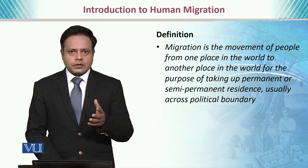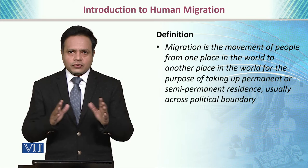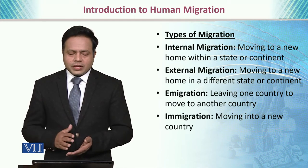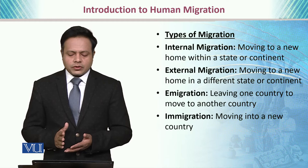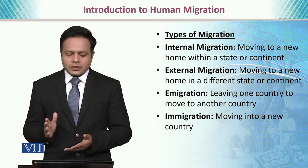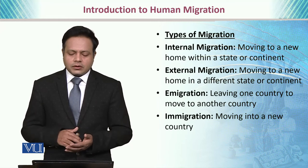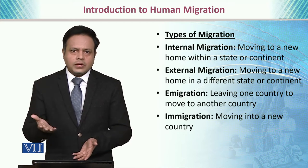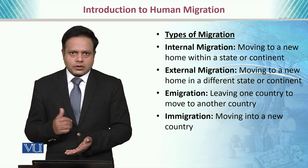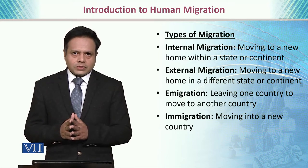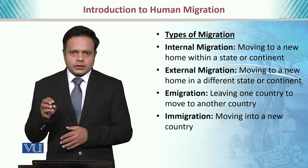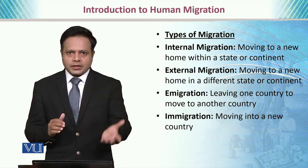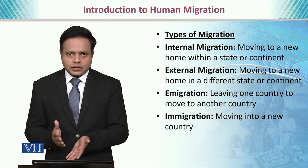Migration can vary depending on whether it is internal migration or international migration. Types of migration include internal migration, which is moving to a new home within a state or continent, and external migration, which is moving to a new home in a different state or continent, or across different political boundaries. Emigration and immigration are two different concepts defined relative to the migrant's position.